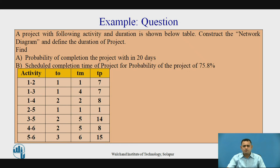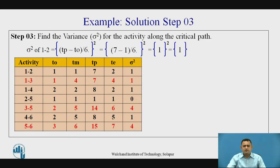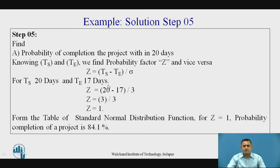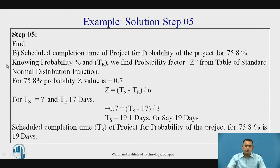From the table, the probability completion of the project is 84.13 percent. The second question requires finding the scheduled completion time for a probability of 75.8 percent.